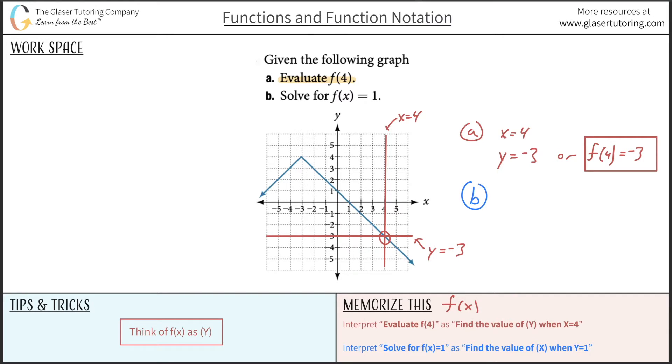Let's take a look then at letter B. So letter B now says solve for f of x equaling 1. Now, you can think of f of x as just your y value. That's what I have over here with the little tip. So think of f of x as y. So basically, it's telling you solve for x when y here is equal to 1.